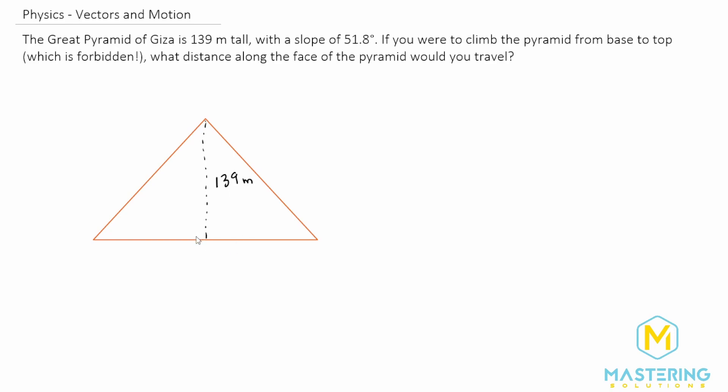From the bottom all the way up to the top is 139 meters. Now we just created two right triangles, and we want to find this right here. And they tell us that the angle from the bottom of the pyramid right here is 51.8 degrees.